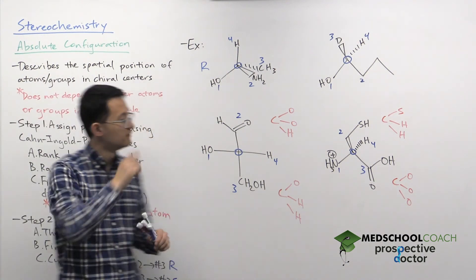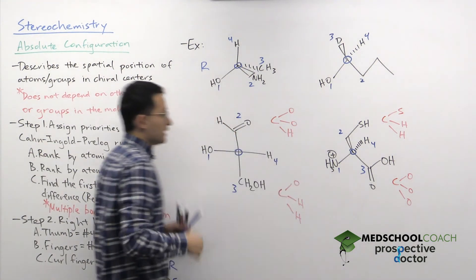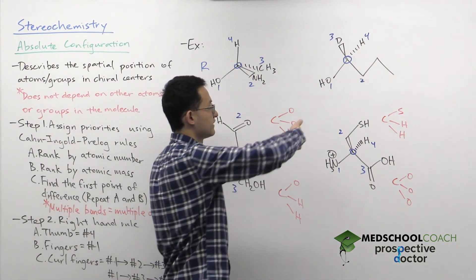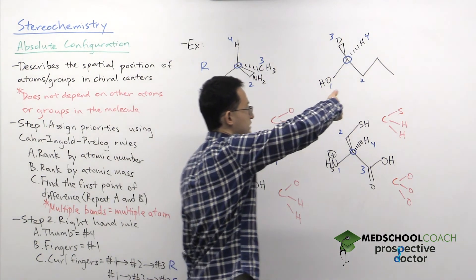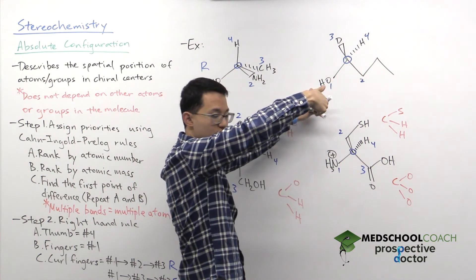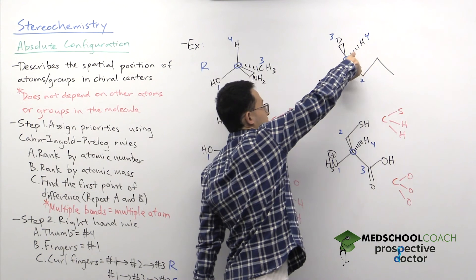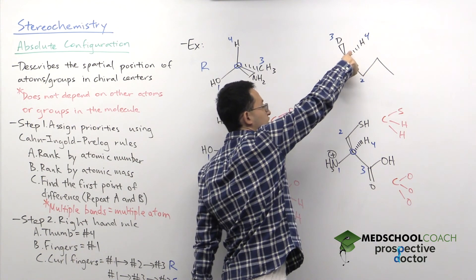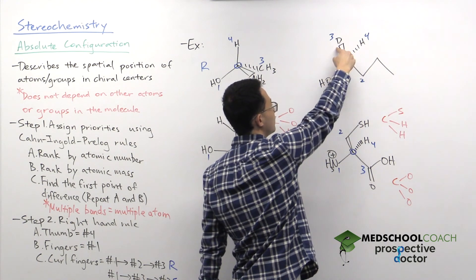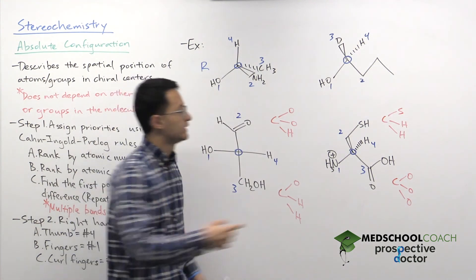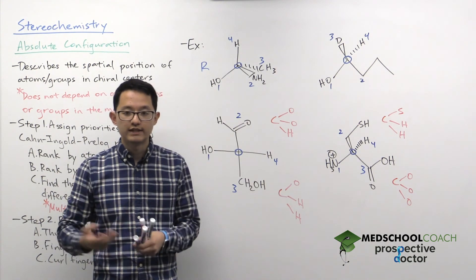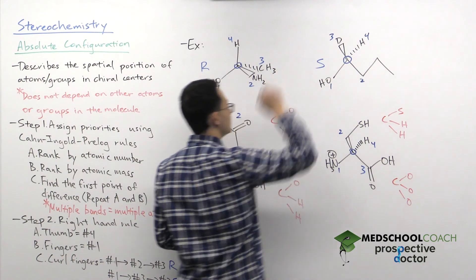Let's take a look at another example on the top right. Thumb points towards priority number four — this time it's going into the plane of the page away from you and to the top right, so your thumb points away from you towards that hydrogen. Your fingers should be in the plane of the page pointing towards the bottom left. When you curl your fingers, you curl up and hit priority number three first, then eventually priority number two. So the curl goes one, three, two — this is S for its absolute configuration.